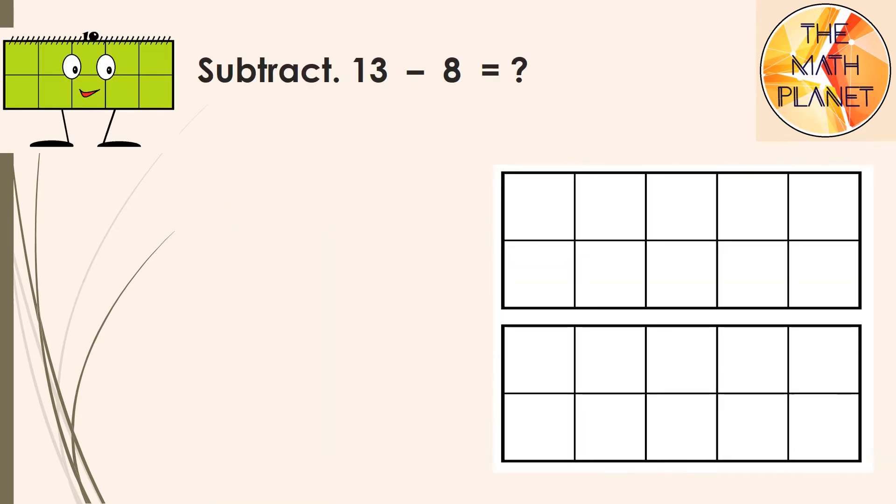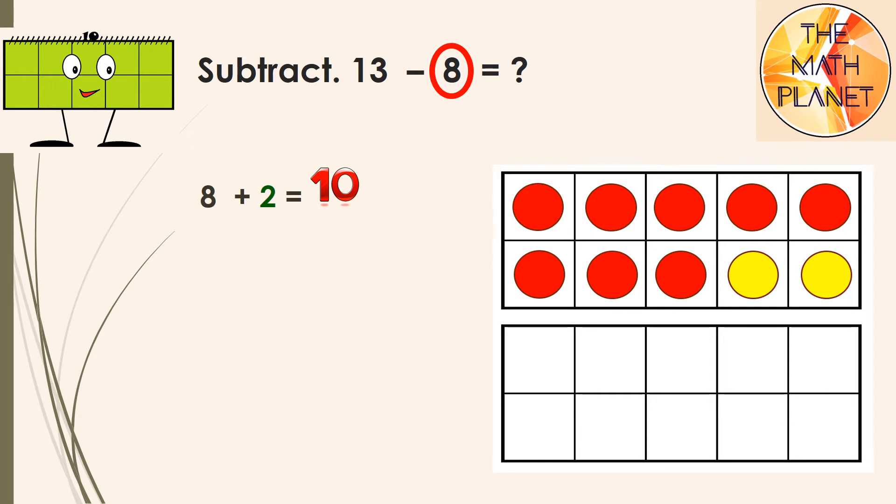Let's find 13 minus 8. I will start by drawing 8 counters using 10 frames. Next, I will add to make 10, so I add 2 counters. Next, I will add 3 more counters to reach 13, which is the whole. So, actually, I added 5 counters. 8 plus 5 equals 13, so the difference is 5.